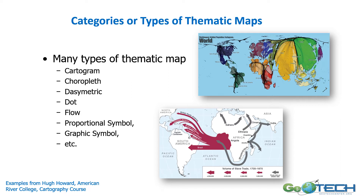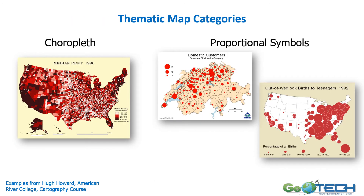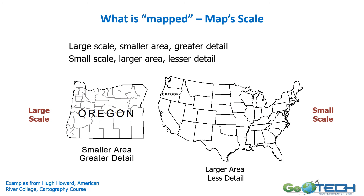The cartographer has to decide which type of map best represents the data and how it can be visualized. Here we're looking at two examples: a choropleth map with a ramp of median rent in 1990, and then proportional symbols on the two maps on the right to show different values. This is showing map scale — large scale maps, like the map on the lower left showing Oregon, cover a smaller area with greater detail, while the map on the right is a small scale map showing a larger area with less detail.